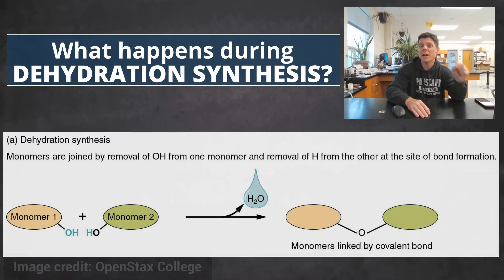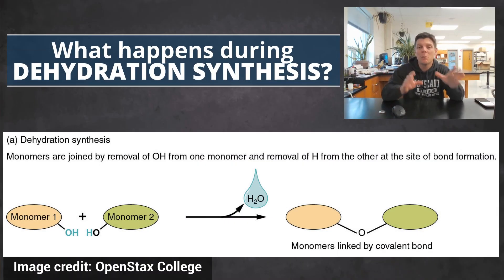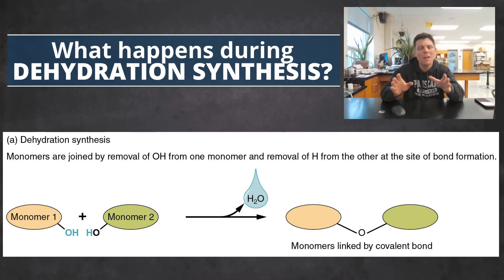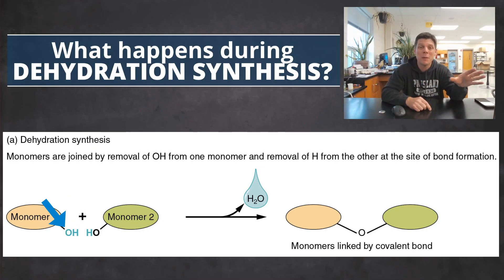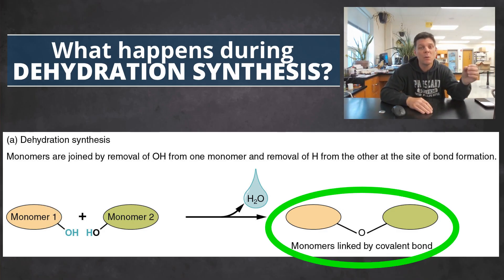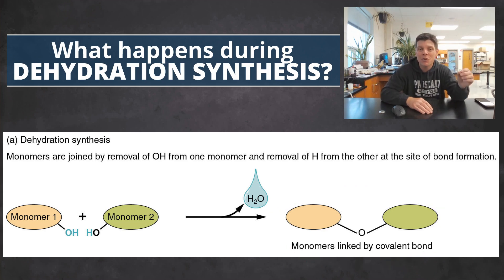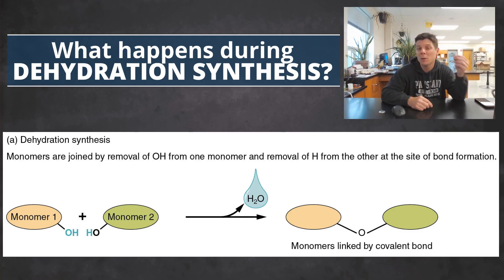Now let's consider the reverse process: dehydration synthesis. This process allows two monomers to bond together, and as multiple monomers are joined, a polymer is formed. As each new bond forms between monomers, a hydrogen ion is removed from one monomer while a hydroxide ion is removed from the other. The formation of each new bond also results in the formation of a water molecule, as the hydrogen and hydroxide ions join together to form HOH, or H2O.